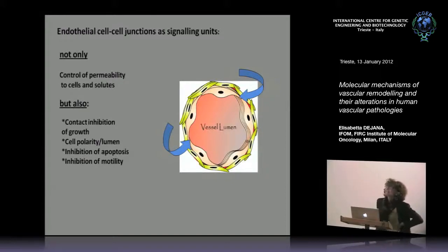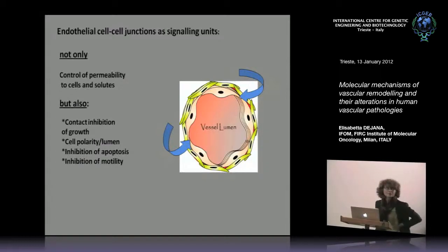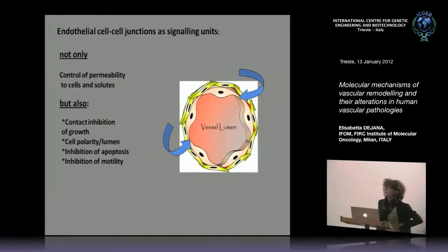Why are we interested in endothelial cell-to-cell junctional structures? They are important not only for the control of permeability to cells and solutes — including inflammatory cells like leukocytes — but what is increasingly clear is that these structures also transfer intracellular signals. These signals are important for inducing contact inhibition of cell growth, which is particularly relevant in endothelial cells because they grow in monolayer and are contact-inhibited as soon as they establish junctions. These structures also establish cell polarity, which is crucial for correct lumen organization, and they induce stabilization signals that inhibit apoptosis and cell motility.